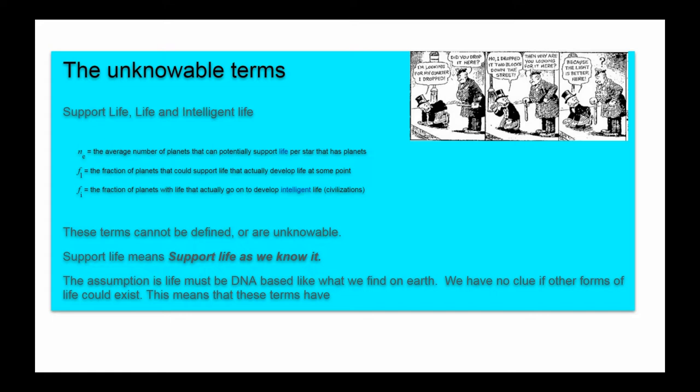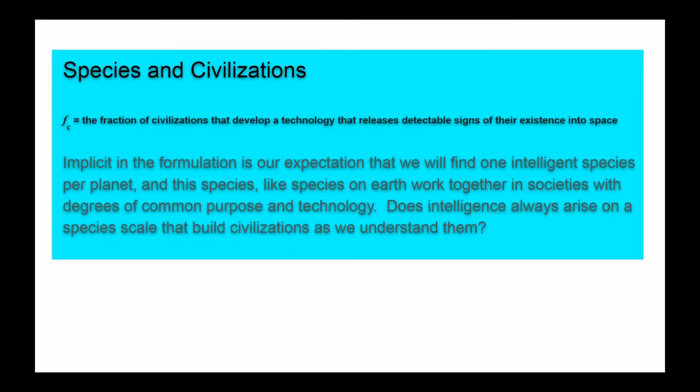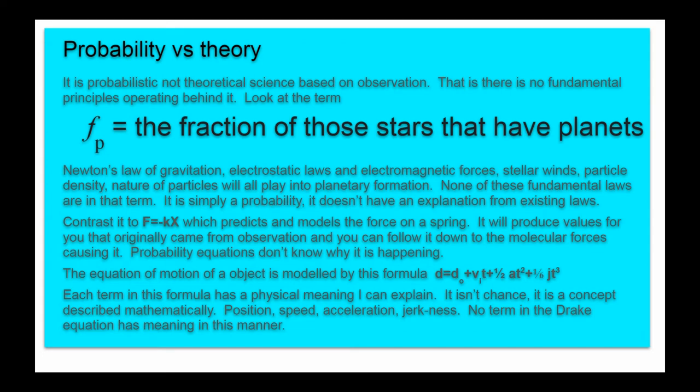And the other two, there's just no way of knowing until we go out there and actually get the answer. There's no predictive power on a probability formula until you populate your probabilities, which means you gotta go to another place and find the life. Even species and civilizations, I have a problem with that term, because there's an expectation that we're gonna find like one smart species per planet, and like those on Earth, they're gonna work together in societies and civilizations with some common purpose and technology. And is that really guaranteed? That's the only way life arises? So you can see the problem with the equation, it has a lot of unknowns in it.